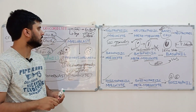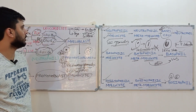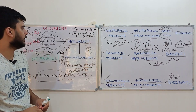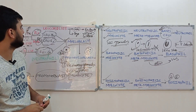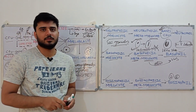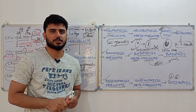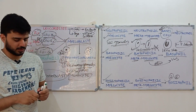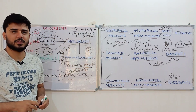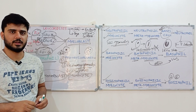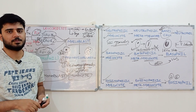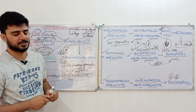We have now discussed the formation of granulocytes and monocytes. In the next lecture, we will discuss the formation of hemoglobin, which is a very important chapter. This concludes the hemopoiesis portion. If you like this content, please subscribe to the channel, as videos are uploaded every other day.